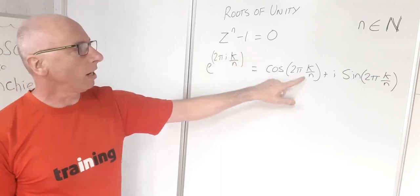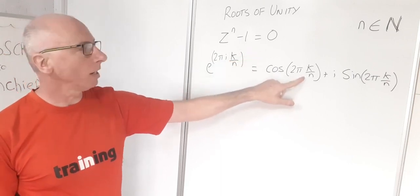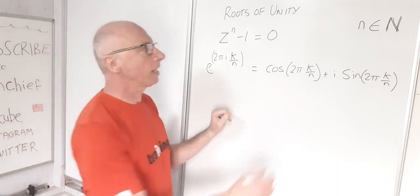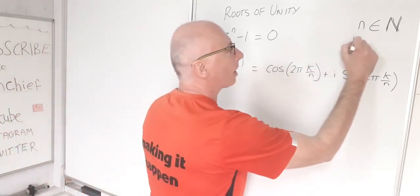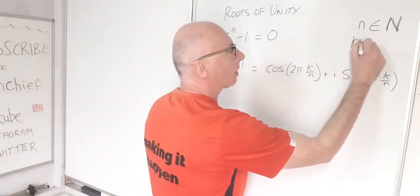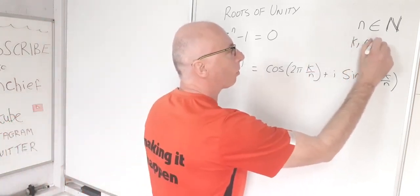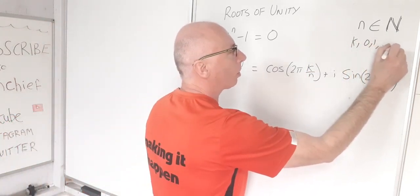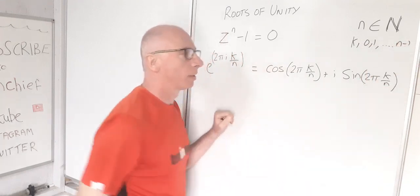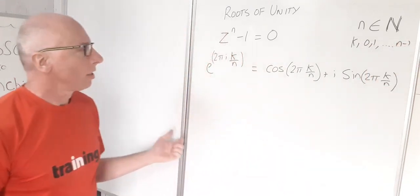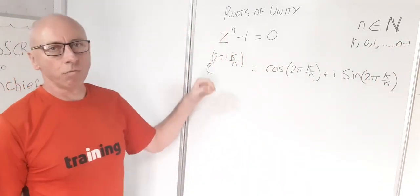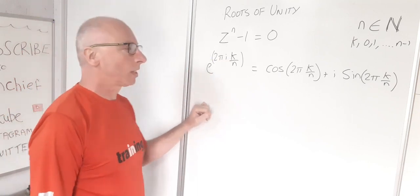Here our k takes the values 0, 1, all the way up to n minus 1. That's what we use to find all our roots of unity.